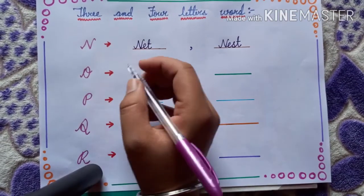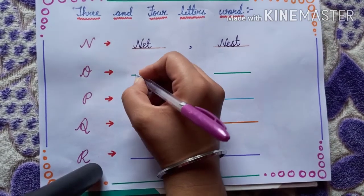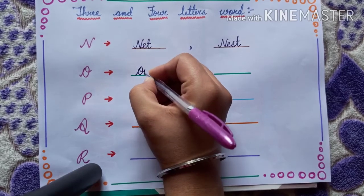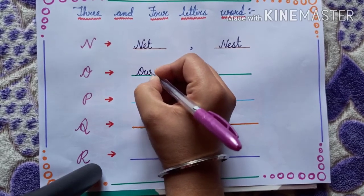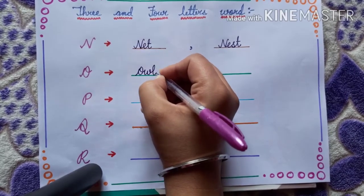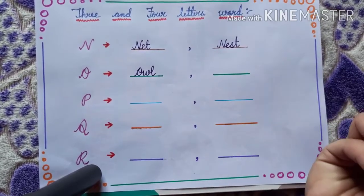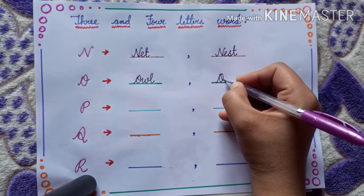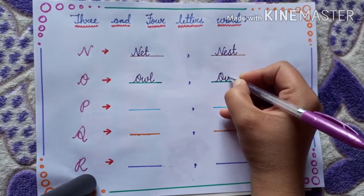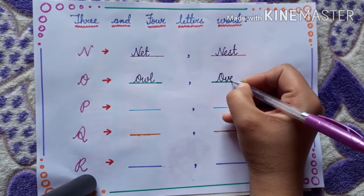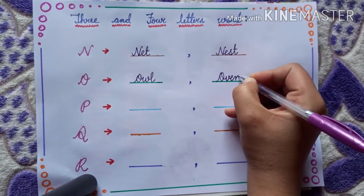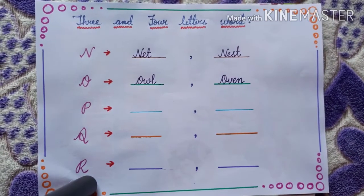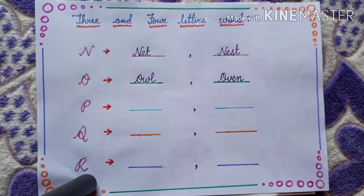Next, O. O, W, L — owl. O also stands for oven. O, V, E, N — oven.